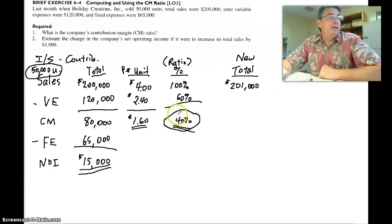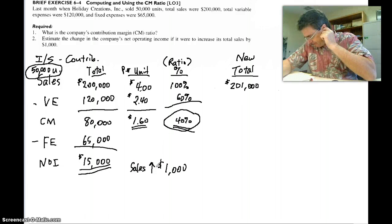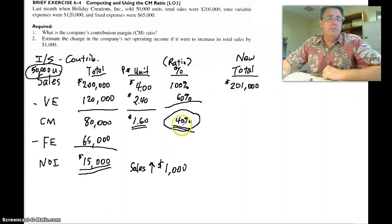Let's estimate it using this number and then we'll prove it out by calculating the entire income statement. So if we have a $1,000 increase in sales. I'm just going to put sales increase by $1,000.